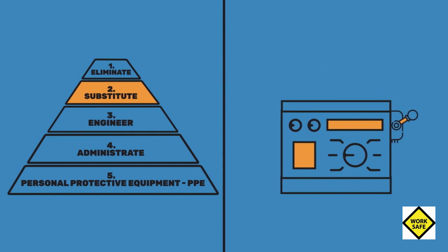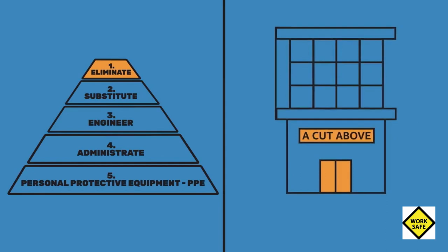At the highest level of the Hierarchy of Controls concept, you would eliminate the danger altogether. One way to do this is to contract the work to specialists who have the training and equipment to get the job done without putting anyone in harm's way.